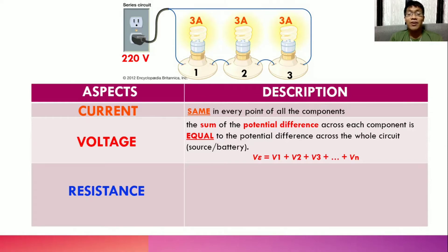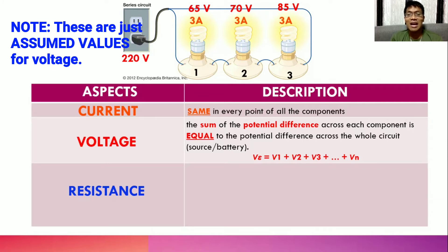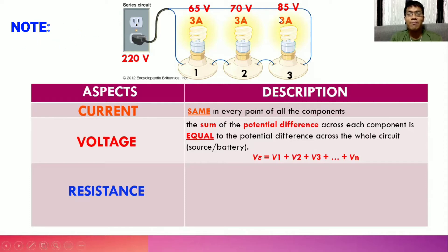How about if the resistance in these three bulbs are uneven or not equal? Let's try to have these voltages. So we got 65, 70, and 85 volts. When you add them up, 65 plus 70 plus 85, it is equal to 220 volts. That's the meaning of this description, that the total voltage in the whole circuit should be equal to the sum of all the potential differences across each component.